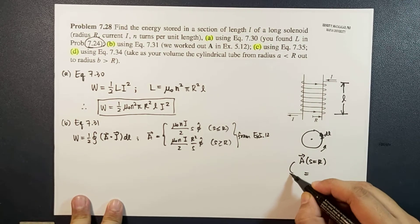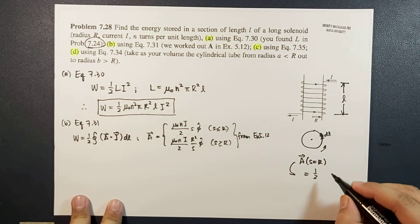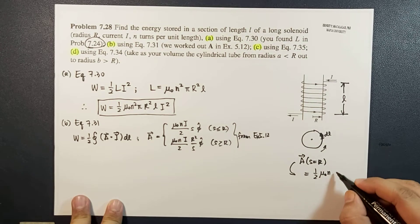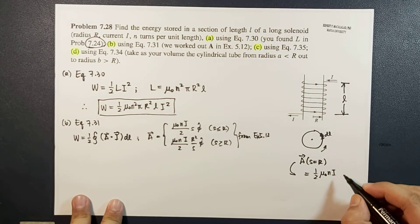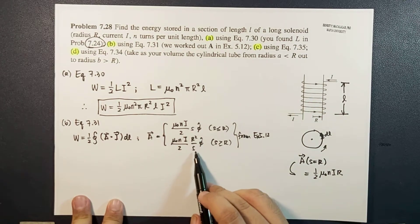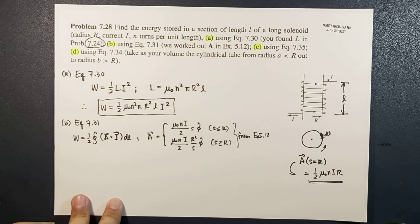In this case, this is now equal to one half μ₀nir. Either you choose this one or this one, you still find the same magnetic vector potential.